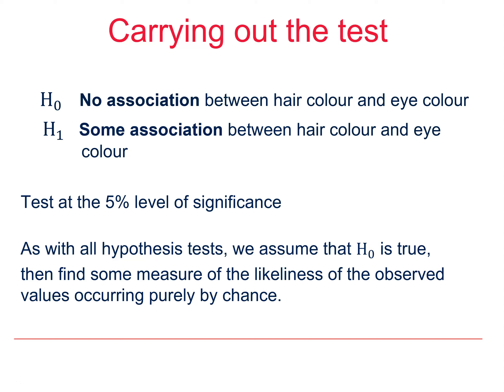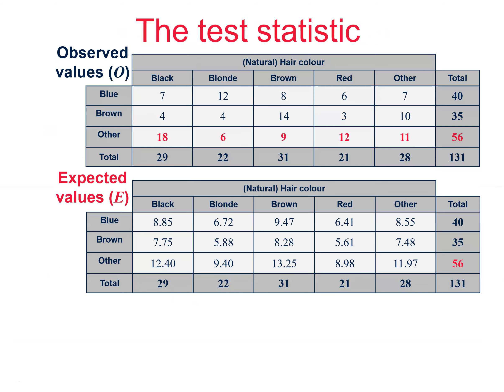We are going to be using those tables of observed and expected values that we found in the previous video. You will recall that we had our observed frequencies of 131 people with their hair and eye colour, and we also worked out the frequencies we would expect to have if hair and eye colour were completely independent.